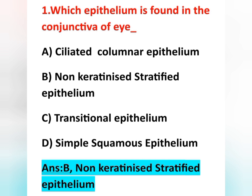Transitional epithelium lines the renal pelvis, ureter, and urinary bladder. Simple squamous epithelium is mainly present in alveoli, nephrons, and collecting ducts. Blood vessels are mainly lined by simple squamous epithelium — this is an important point. So the answer for our question: the conjunctiva is lined by non-keratinized stratified epithelium, option B.